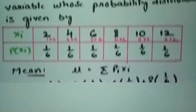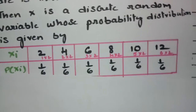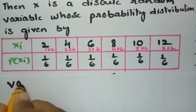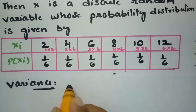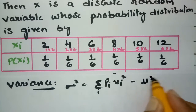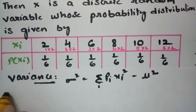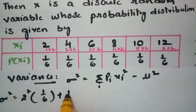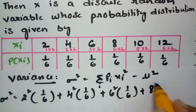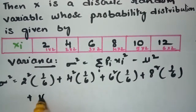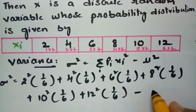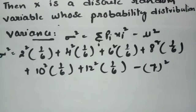Next, we find the variance. The formula is σ² = Σ pi·xi² − μ². So σ² = 2²×(1/6) + 4²×(1/6) + 6²×(1/6) + 8²×(1/6) + 10²×(1/6) + 12²×(1/6) − 7², since μ = 7.